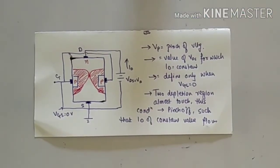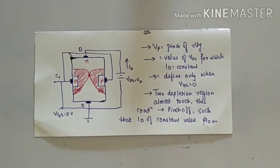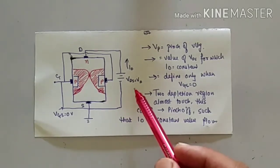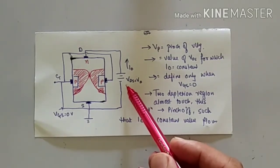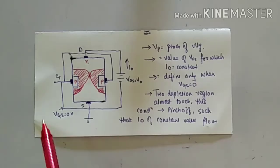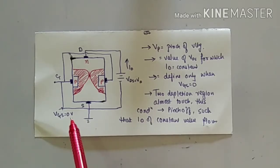Today we will see the concept of pinch-off voltage in FET. Here I have drawn a diagram you can see in the video. This is VDS voltage supply and VGS is equal to zero. This is an important point — pinch-off voltage is only defined when VGS is equal to zero.